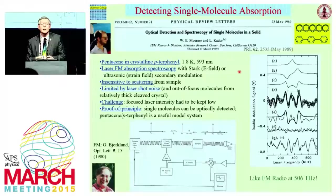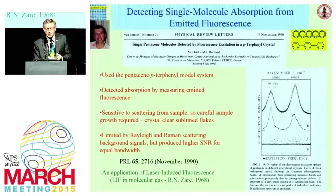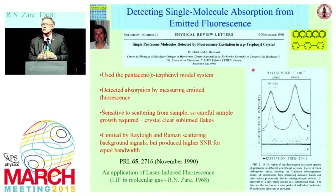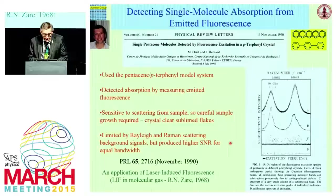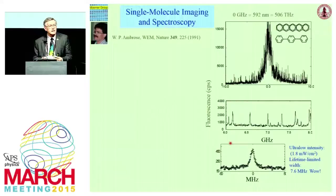An important step occurred a year later when Michel Auret also detected the absorption from a single molecule — but he detected it by recording the emitted fluorescence. Here's some of his data: homogeneously broadened lines and these little dots are the single molecules. Collecting fluorescence is a powerful thing to do, but you have to lower scattering backgrounds and be sure that any Rayleigh and Raman scattering are small compared to the emission from the molecule. That is doable. I like to say that if there were a fourth Nobel Prize, Michel Auret should have gotten it. This method of detecting single molecule absorption by fluorescence swept the field in the early 90s.